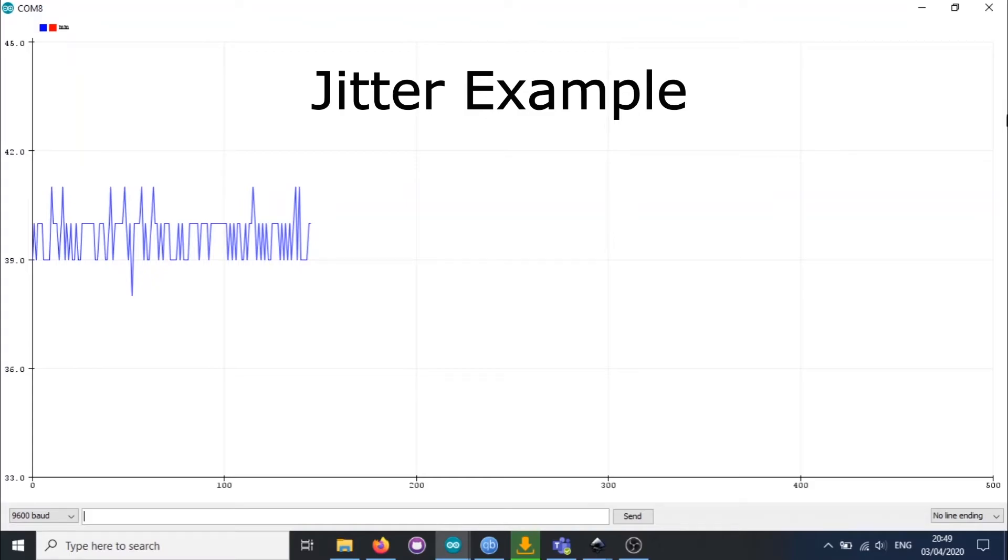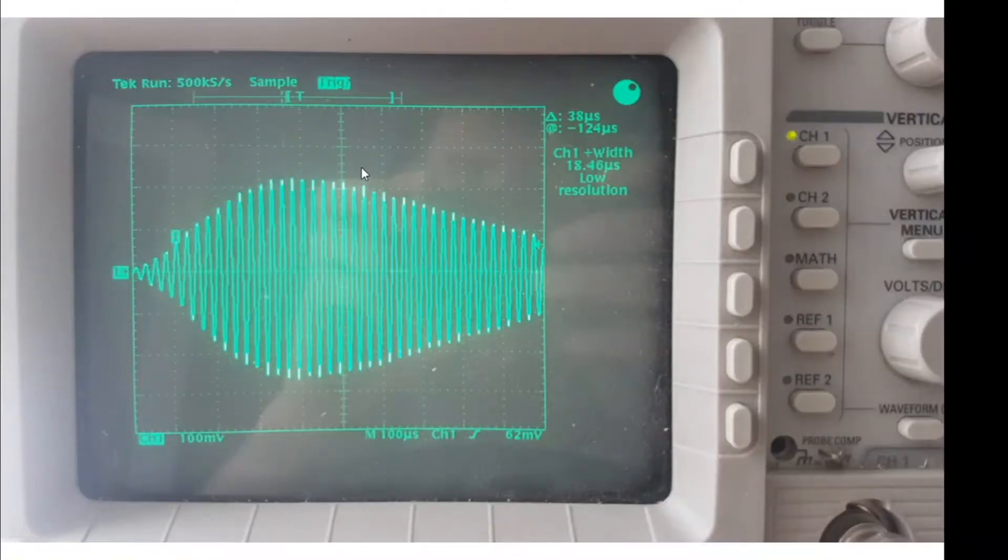This is the received ultrasonic signal on an oscilloscope. You can see it's got this funny envelope, kind of a teardrop shape. Even though only eight cycles of the 40 kilohertz are supposed to be sent, we're getting way more cycles on the received end because of the mechanical inertia of the piezo element in the transducers.